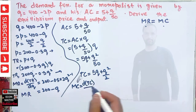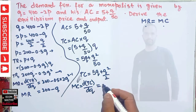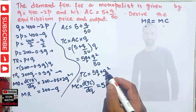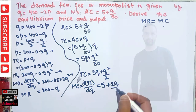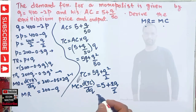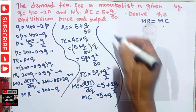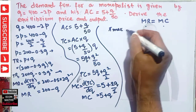Marginal cost is the derivative of total cost with respect to quantity. The derivative of 5Q is 5, and the derivative of Q²/50 by the power function rule is 2Q/50 = Q/25. So marginal cost = 5 + Q/25.